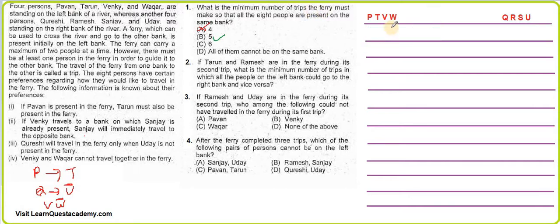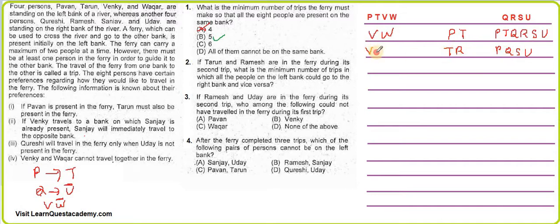In trip one, T travels left to right — and because of the P-T rule, we send P along with T. Left: V, W. Right: P, T, Q, R, S, U. In trip two, T and R come back right to left. Right becomes: P, Q, S, U. Left becomes: V, W, T, R. Now T and R belong to left originally but are on the right exchanged; P and R have started their swap.